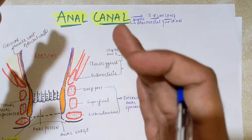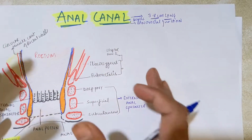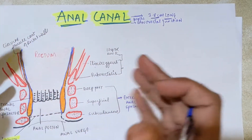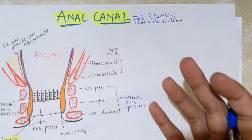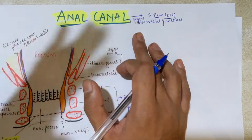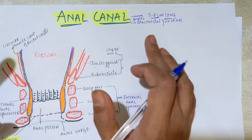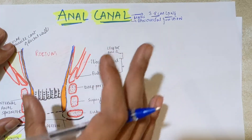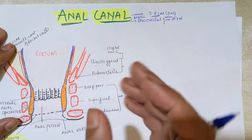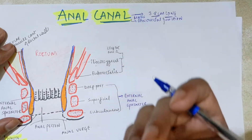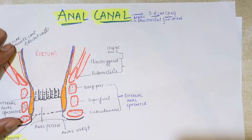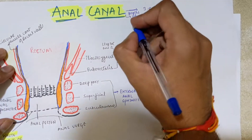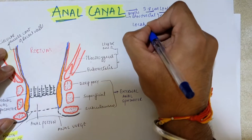The sphincters close the anal canal except during defecation, when they open and relax to allow the process to occur. The internal anal sphincter is involuntary and the external anal sphincter is voluntary.